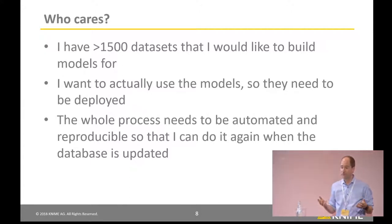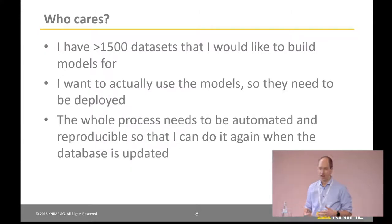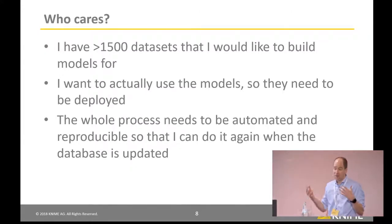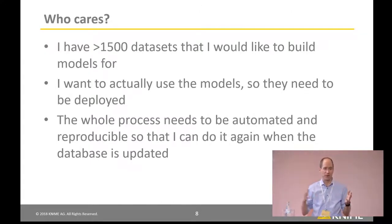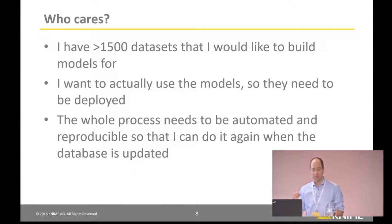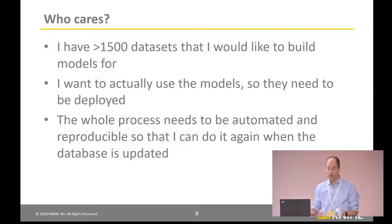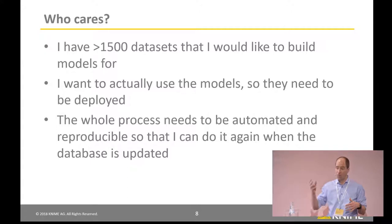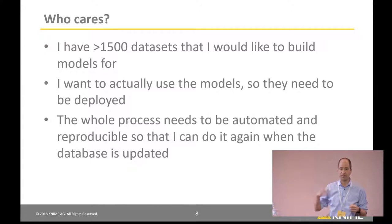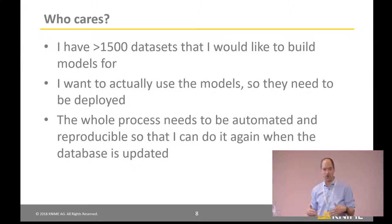The answer is I actually had 1,500 datasets — more than 1,500 datasets that I wanted to build models for. I want to build those models, but then I also actually want to use the models. So I need to build them and deploy them. The whole process needs to be automated and reproducible so that when the database is updated in six months, I can repeat the process. If it takes the three of us two weeks to build all the models and we have to repeat that again in six months, it's a disaster. So it all needs to be automated.